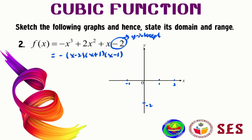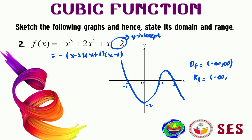Let us sketch the graph. It passes through negative 2 (the y-intercept) and through x = -1, x = 1, and x = 2. The domain for this function is negative infinity to positive infinity, and the range is also negative infinity to positive infinity.